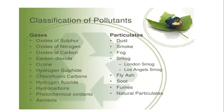Classification of air pollutants includes gases and particulates. Gases include oxides of sulfur, oxides of nitrogen, oxides of carbon, carbon dioxide, ozone, hydrogen sulfide, chlorofluorocarbons, hydrogen fluoride, hydrocarbons, photochemical oxides, and aerosols. Particulates include dust, smoke — which can be divided into London smog and Lausanne smog — fly ash, soot, fumes, and natural particulates.